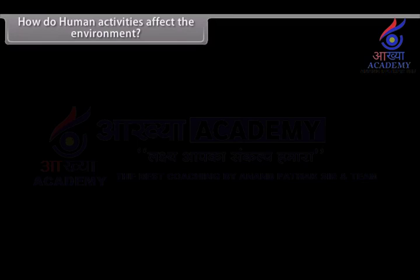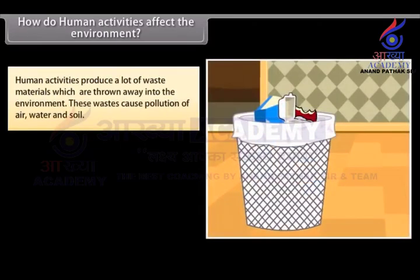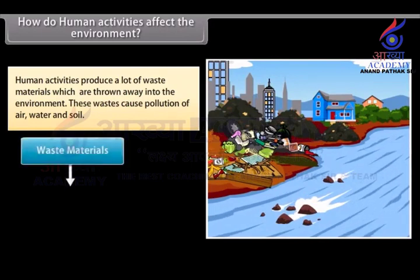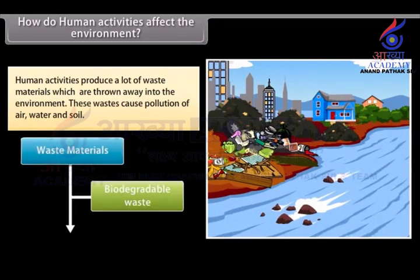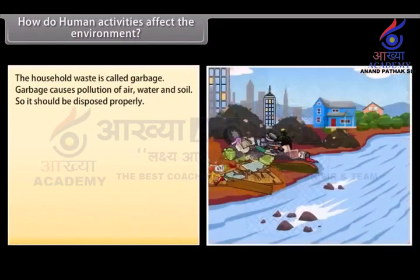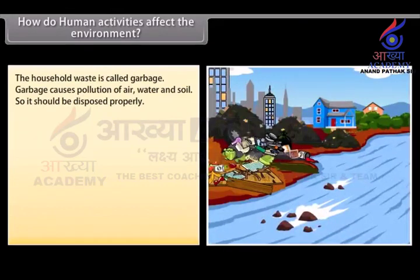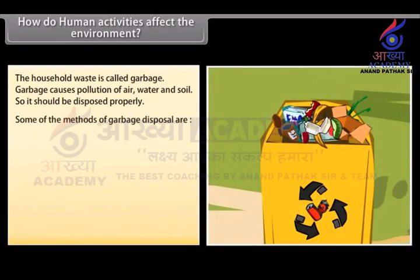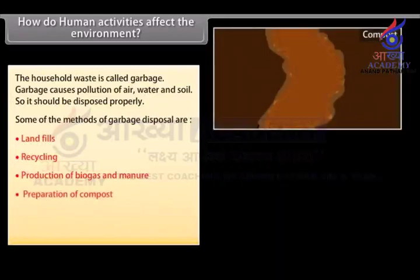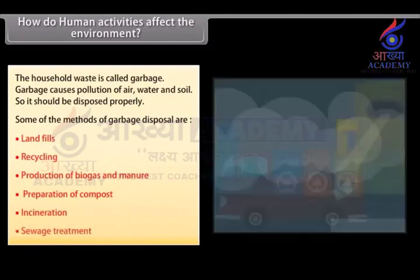Human activities produce a lot of waste materials which are thrown into the environment. These wastes cause pollution of air, water and soil. Waste materials produced are of two main types: biodegradable waste and non-biodegradable waste. Household waste is called garbage, and it should be disposed of properly. Some methods of garbage disposal are landfills, recycling, production of biogas and manure, preparation of compost, incineration, and sewage treatment.